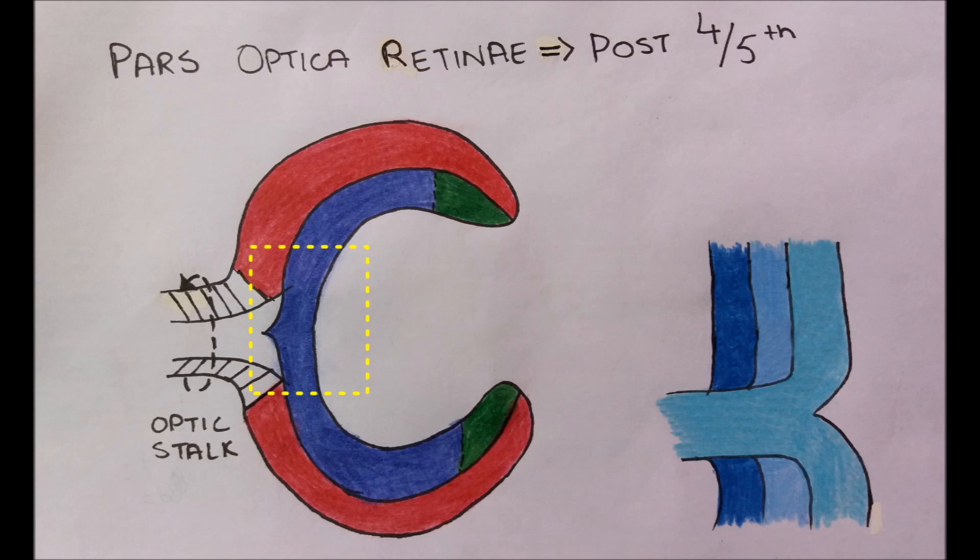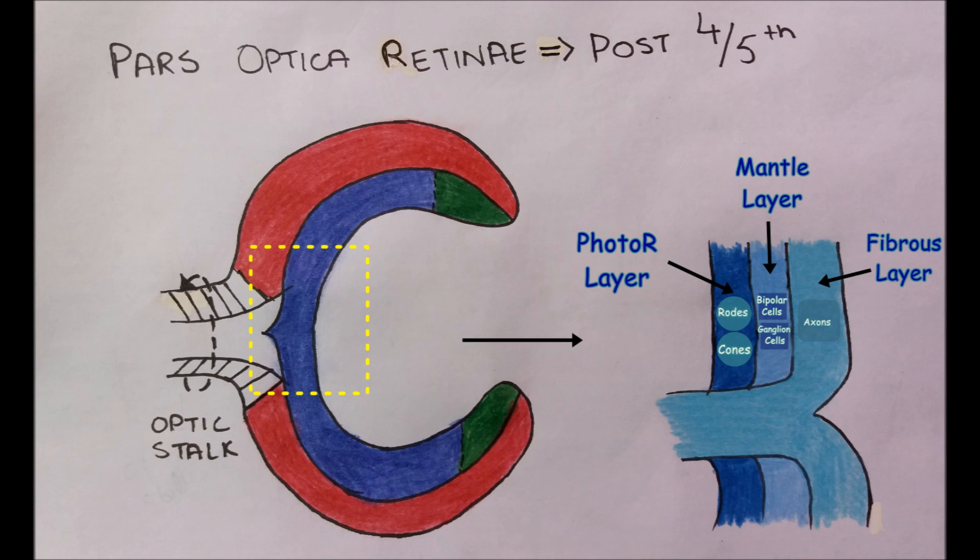The posterior four-fifths of neural layer called pars optica retinae divides into three layers: photoreceptive layer, mantle layer, and fibrous layer. The photoreceptive layer contains rods and cones, the mantle layer contains nerve cells like ganglion cells and bipolar cells, while the fibrous layer contains axons of nerve cells in the deeper layers of retina.